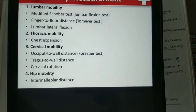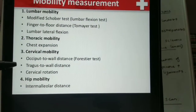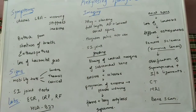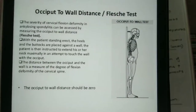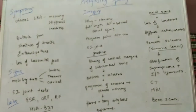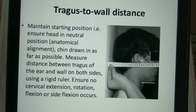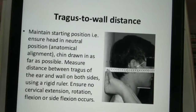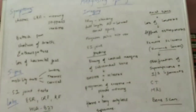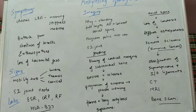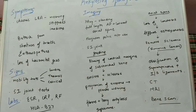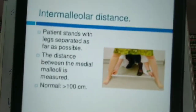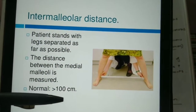For cervical mobility, we have the occiput-to-wall distance, tragus-to-wall distance, and cervical rotation. The occiput-to-wall distance should normally be zero, and this distance is calculated. The tragus-to-wall distance is similar and is calculated from the tragus to the wall. The other test is cervical rotation. To check hip mobility, we have the intermalleolar distance, measured between the two malleoli — normally more than 100 cm.